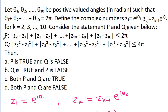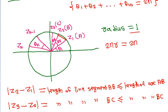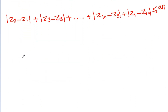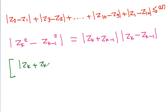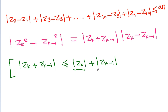So statement P is correct. For statement Q, |gk² - gk-1²| equals |gk - gk-1| times |gk + gk-1|, which is less than or equal to |gk - gk-1| times (|gk| + |gk-1|). Since |gk| equals 1 and |gk-1| equals 1, this gives |gk + gk-1| ≤ 2.